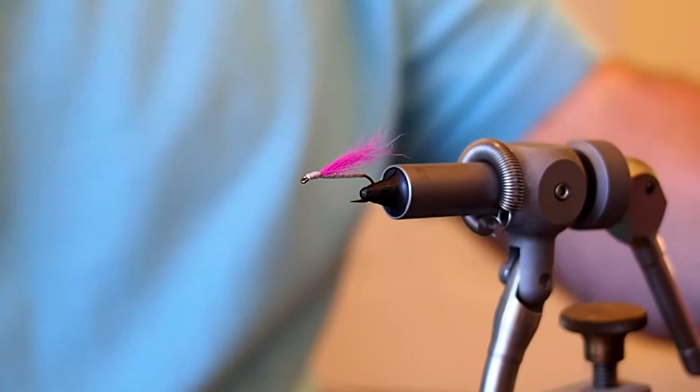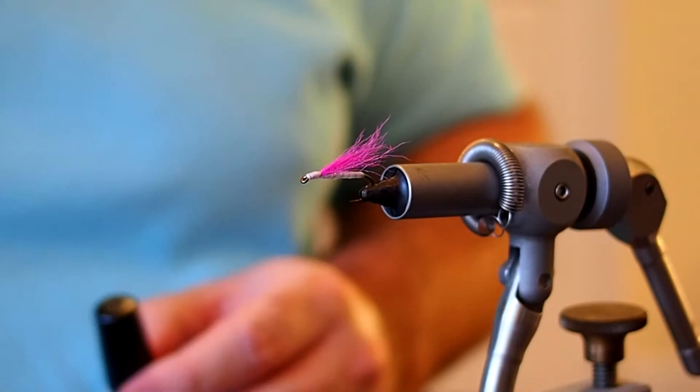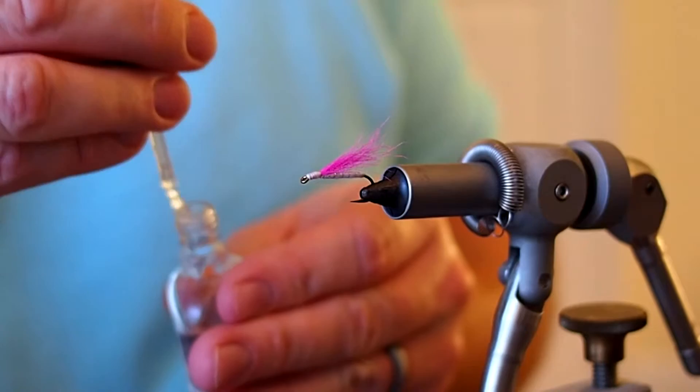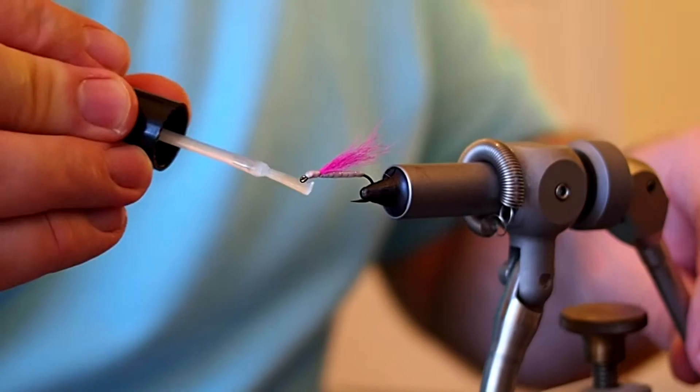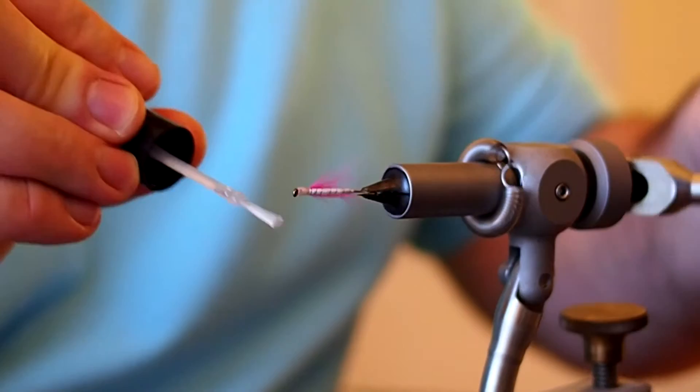This pattern calls for a black dot to be painted on the head. So I'm just going to go ahead and finish the head with some Sally Hansen's before I paint on the eye. And let that dry.